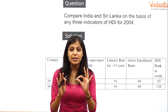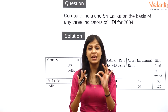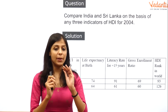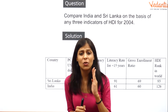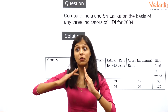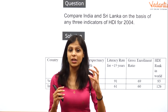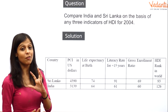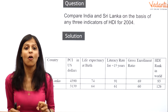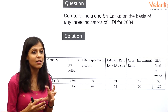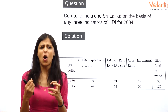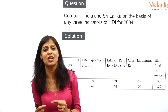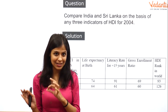HDI stands for Human Development Index. GDP is not the only indicator that reveals the real picture of how well a country is progressing. To get a deeper insight into people's living standards, life expectancy, literacy rate, and earnings, it's important to consider this special index — the Human Development Index.